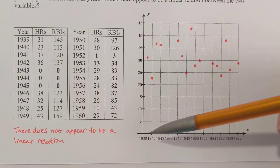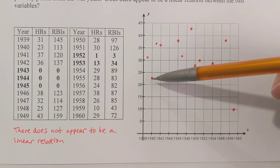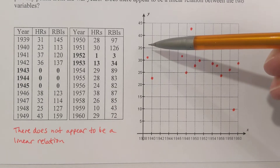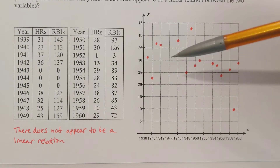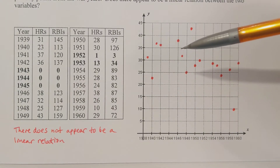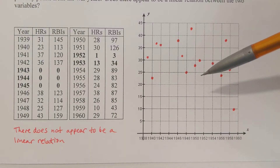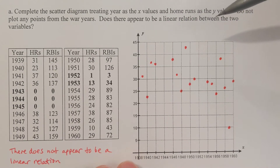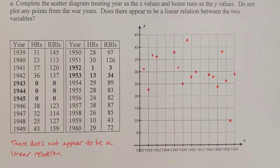I'm going to plot these points: 1939 he hit 31 home runs, 1940 he hit 23, 1941 he hit 37, 1942 he hit 36, and so on — skipping anything in bold. So I don't plot any points from 1943, 1944, 1945, 1952, or 1953. Does there appear to be a linear relation between these two variables? In other words, does a line do a good job representing the flow of the scatter diagram?